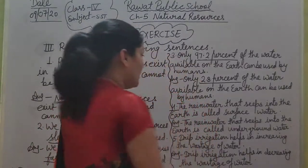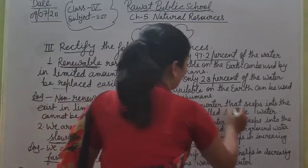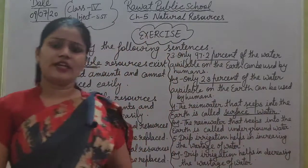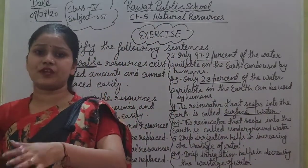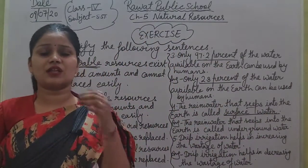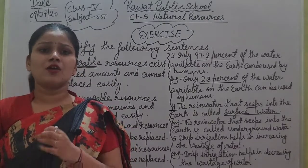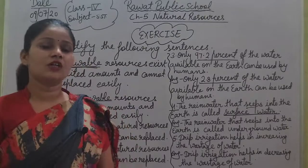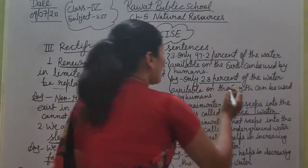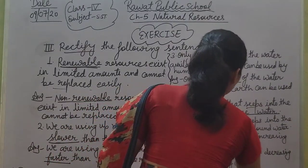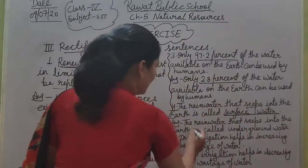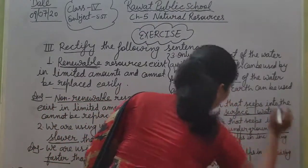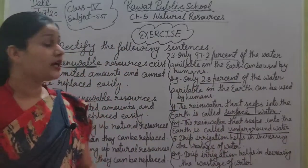Number four: 'The rain water that seeps into the earth is called surface water.' Rain water seeps into the earth — so rain water jo earth ke andar seep ho jaata hai, usi hum surface water bolte hai — no, it's called underground water. So we will write underground water in place of surface water. The corrected sentence: 'The rain water that seeps into the earth is called underground water.'